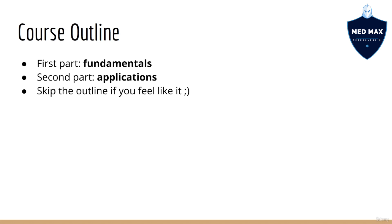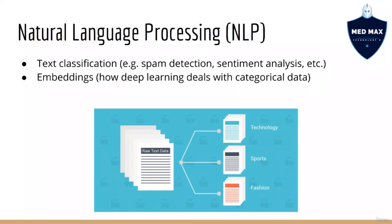The first major part of this course is about the fundamental architectures in deep learning, while the second major part is focused on applications. The first application we will look at is natural language processing, specifically with text documents. You'll see how we can use deep learning for text classification, which is the type of task you would use for spam detection, sentiment analysis, and so on. We'll also look at embeddings, which are deep learning's method of dealing with categorical data.